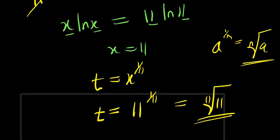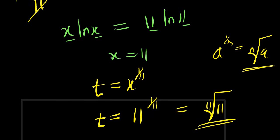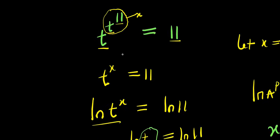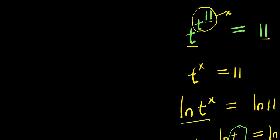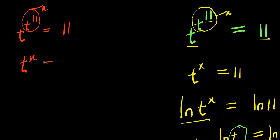Now let's consider the second method. The same problem: t power t power 11 equals 11. I will also replace t power 11 with x, so I have t power x equals 11. And from the substitution, t power 11 equals x.